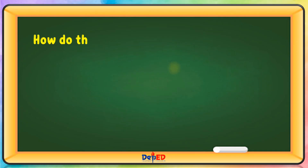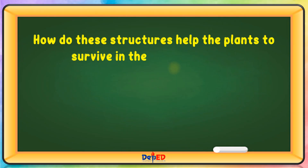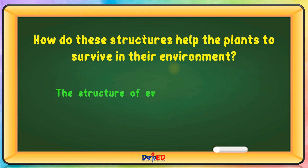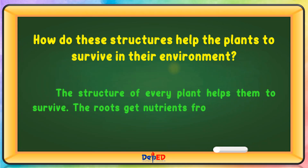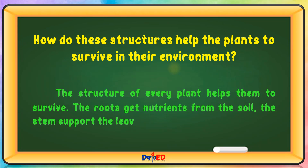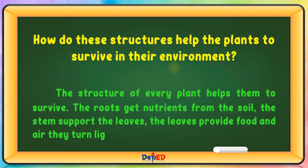How do these structures help the plants to survive in their environment? The structure of every plant helps them to survive. The roots get nutrients from the soil. The stem supports the leaves.